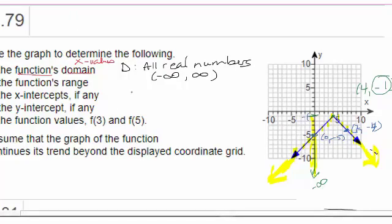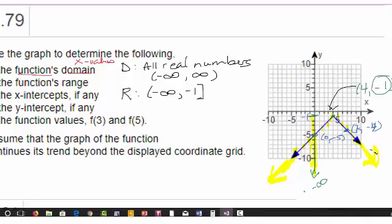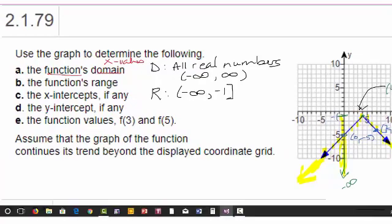So we can use different options, but in interval notation, this would be negative infinity up to negative 1. And we're actually including the negative 1 because there actually is a point on the function with a y-value of negative 1. So we're going to have a bracket there to indicate we're including that point. Okay, so that was part B. We were finding the range of the function.